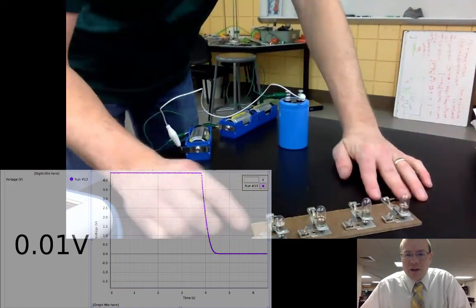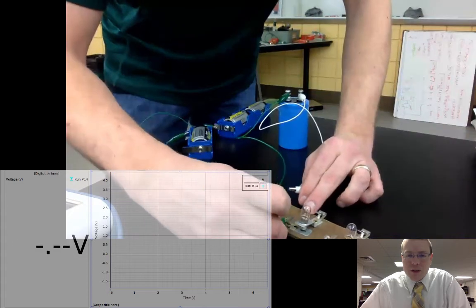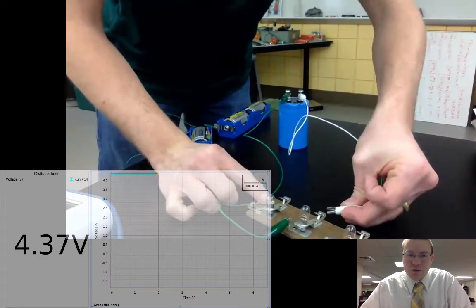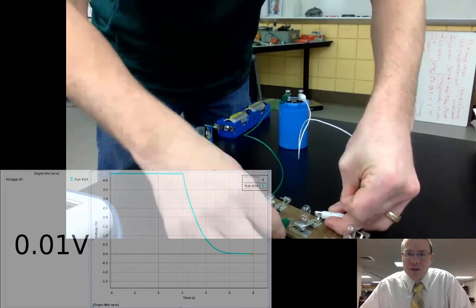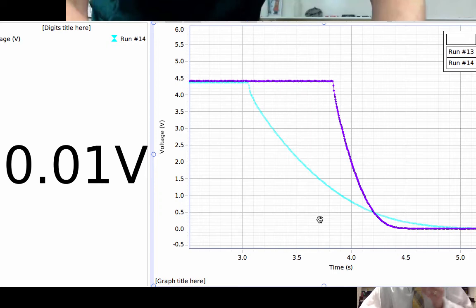That way, the capacitor becomes our source of potential and tries to push charges through the circuit. We switch up the resistor, and with a different resistance, we can see it takes a lot longer for that discharge to happen.